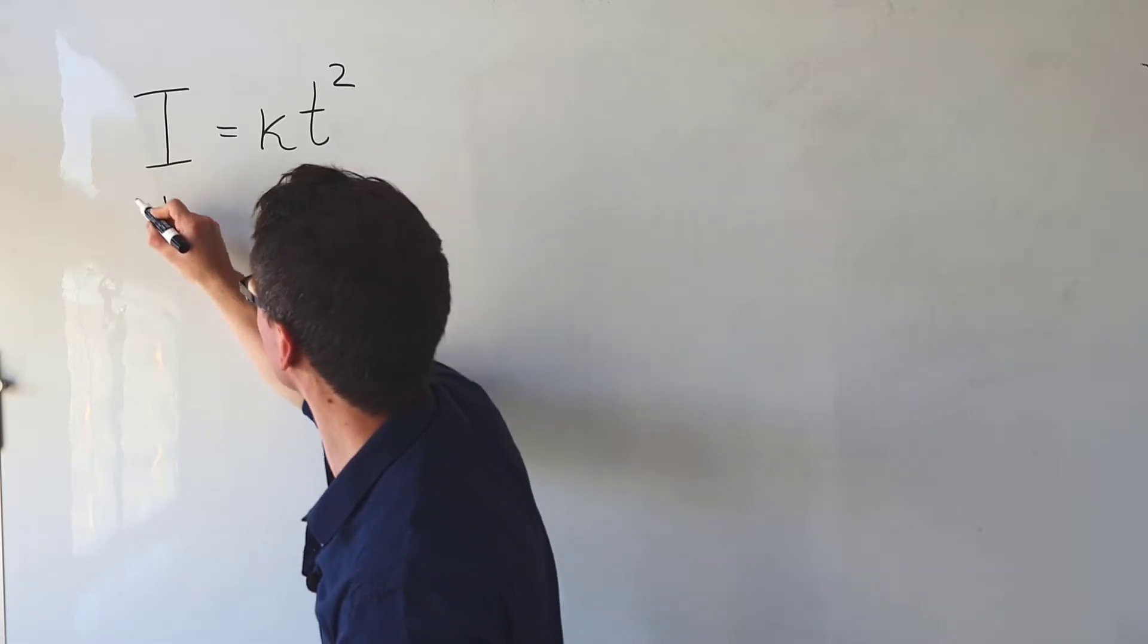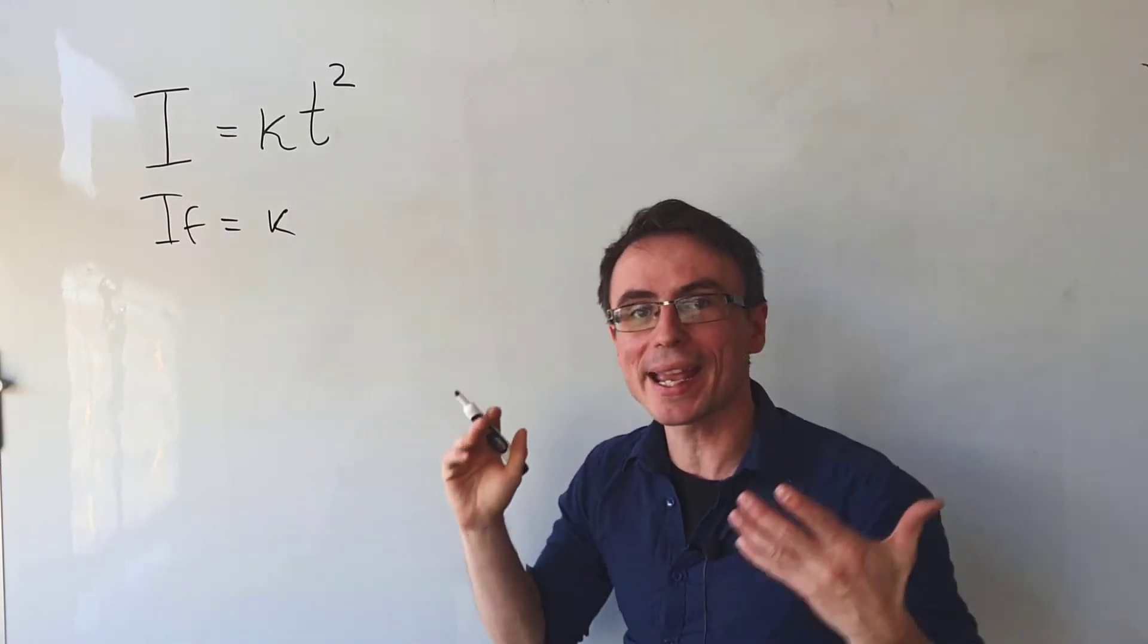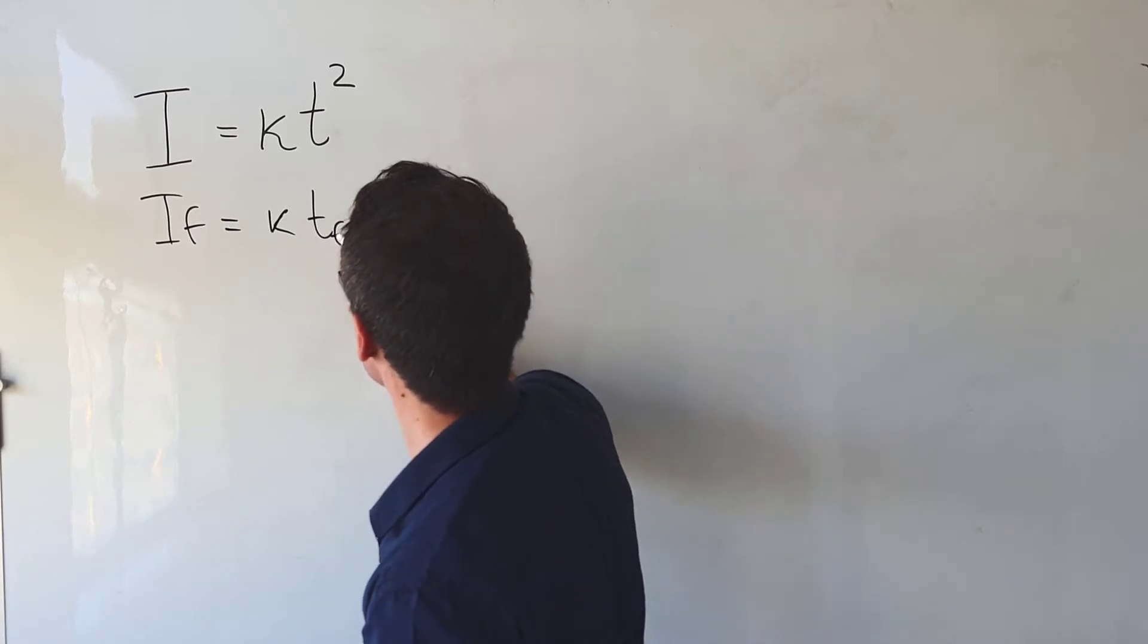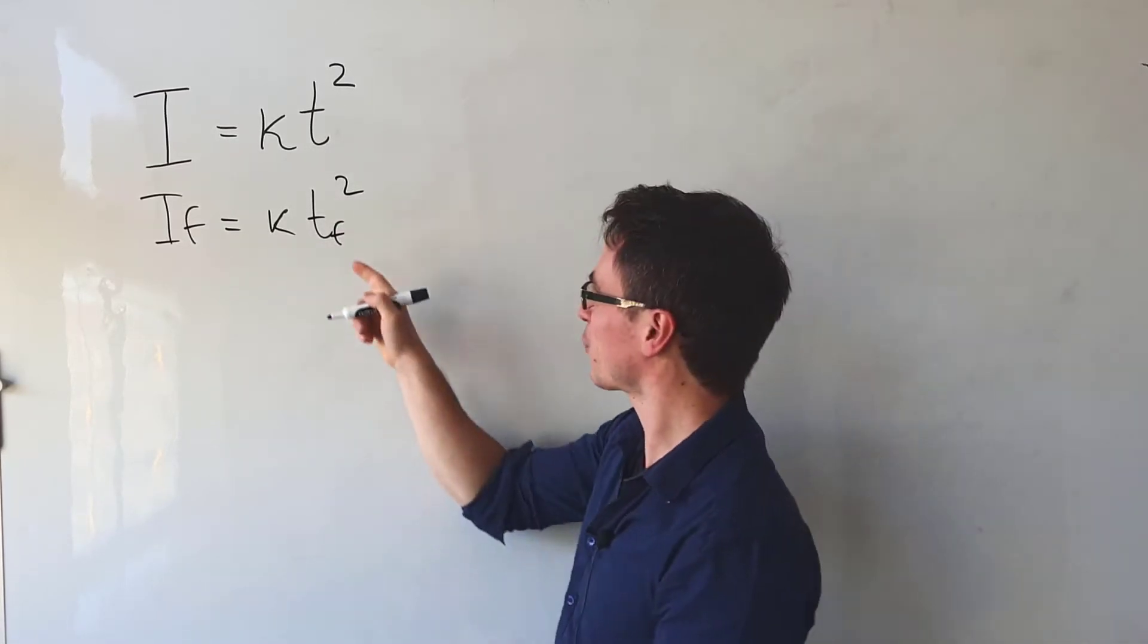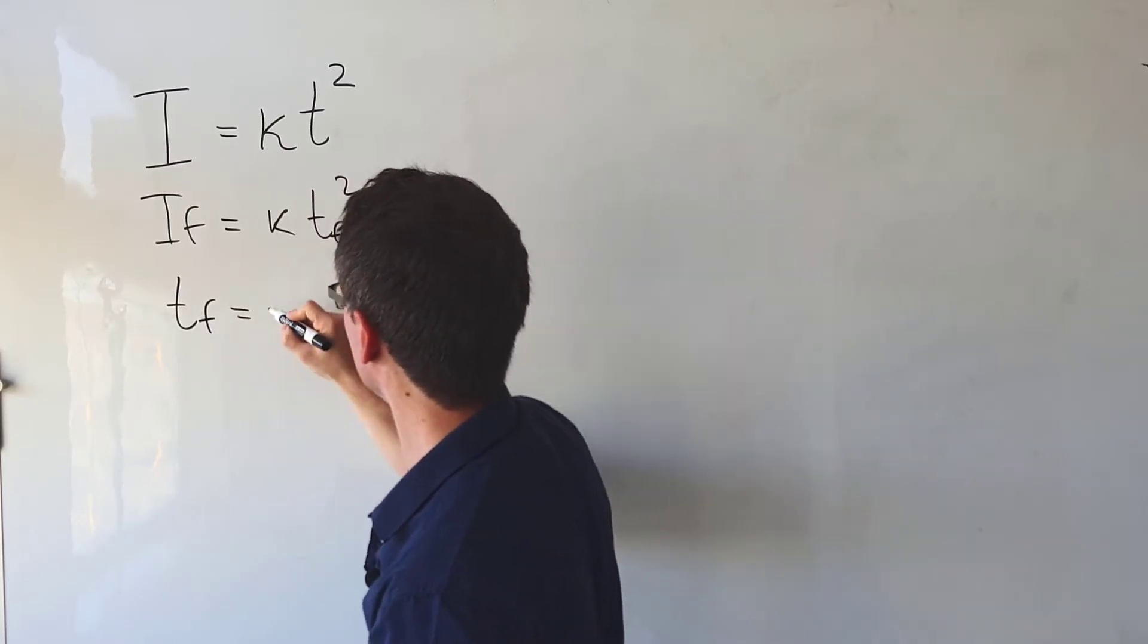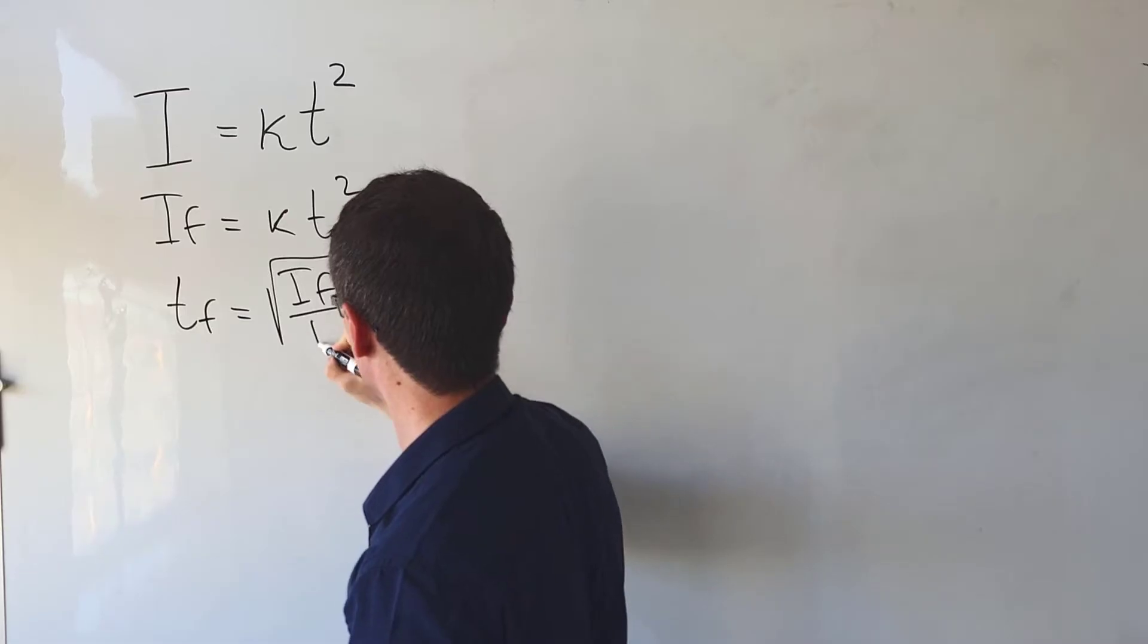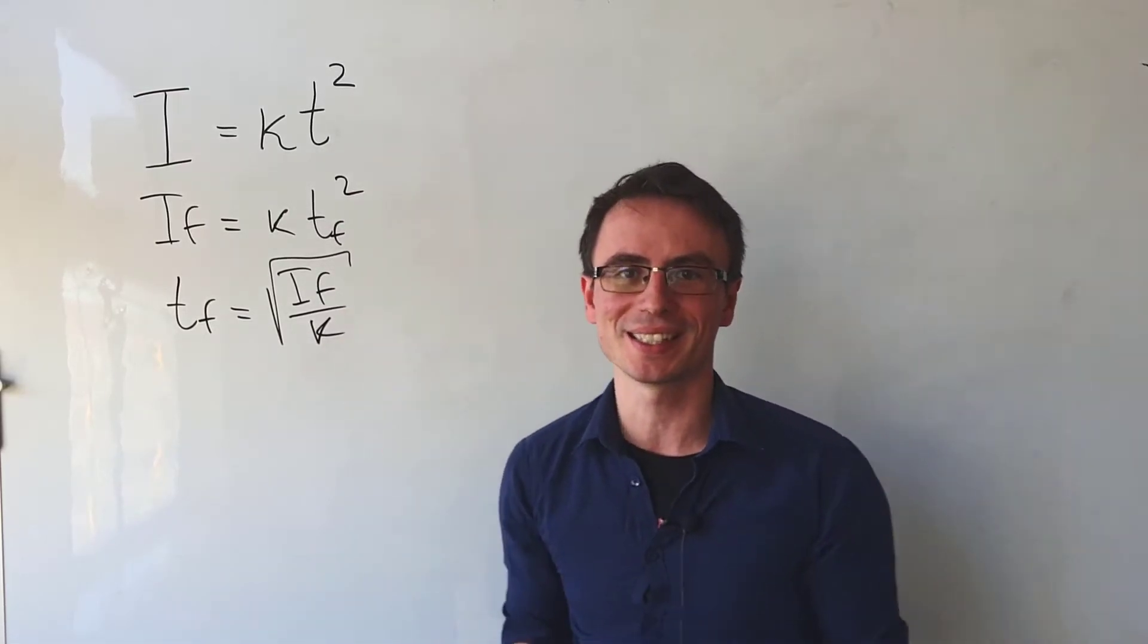So the final current if will correspond to a time t final. Let's rearrange for that to get that t final or tf will be equal to the square root of if divided by that constant k.